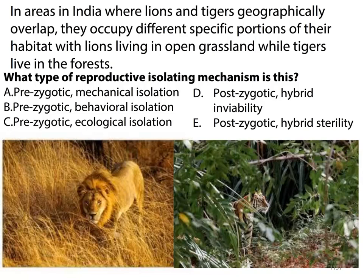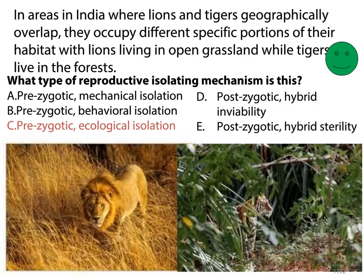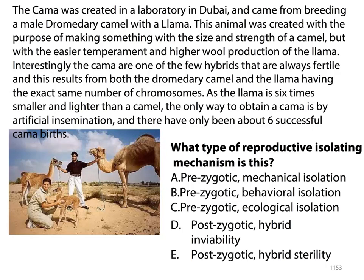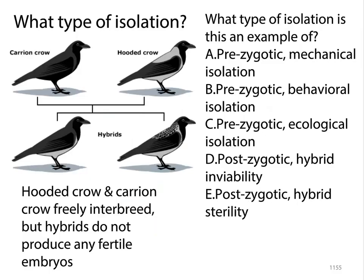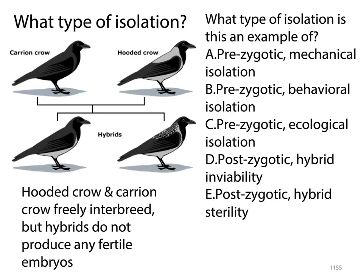Read this practice question, stop lecture, choose your answer, and then continue. Hopefully it makes sense — lions and tigers do geographically overlap, but they occupy different portions of the habitat: lions in open grassland, tigers in the forest. That's ecological isolation, and it's prezygotic because it keeps the zygote from ever forming. The next question: it's prezygotic mechanical isolation because they're not able to fit together properly. The final question: it's postzygotic because the hybrid is formed but the hybrids are sterile.